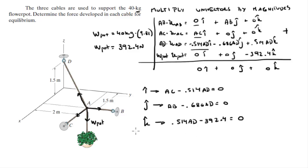So we got three formulas. As you can see, the third formula is easily solved. Let's name this formula 1, this formula 2. Formula 3 can easily be solved - you pass 392 to the other side and you divide it by 0.514, and you get that AD is equal to 763.4 Newtons.